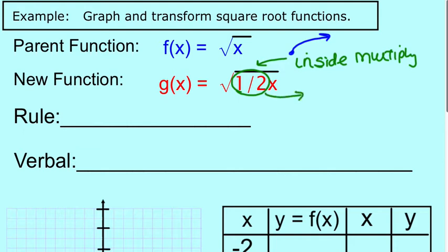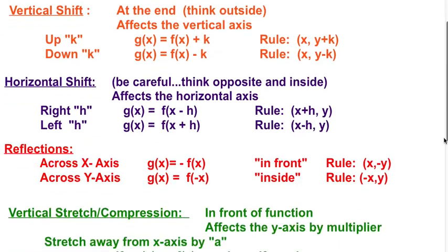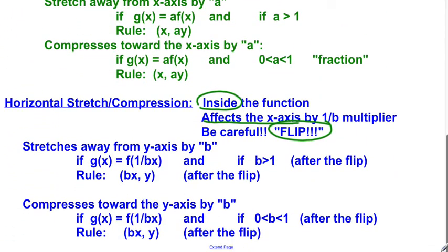So instead of it being 1 over 2, it's going to be 2 over 1, which equals 2. That is our b value. So now we come back to our slide. Is our b value greater than 1, or is it a fraction? Again, after the flip.